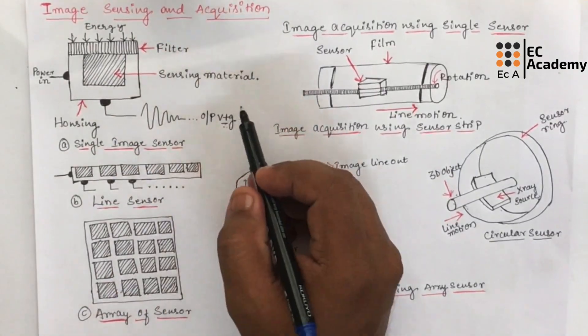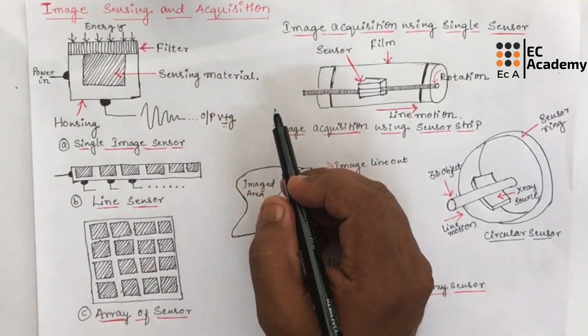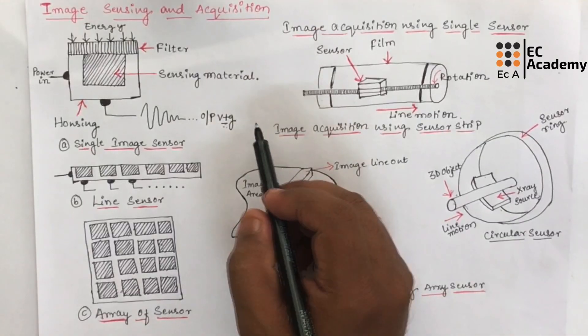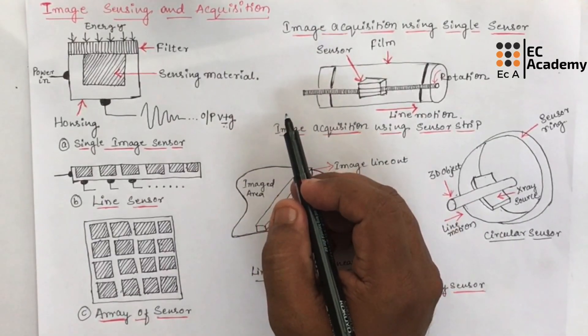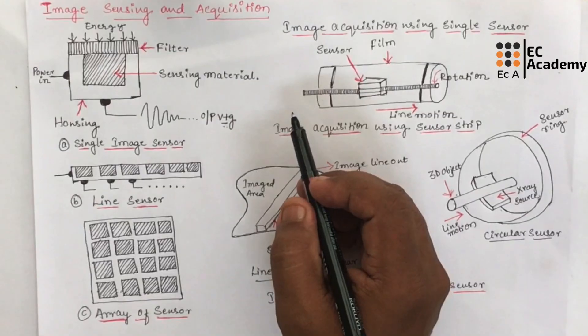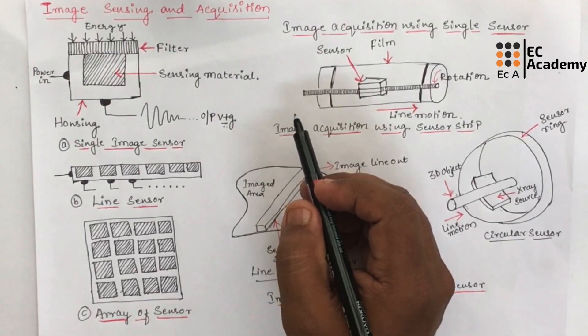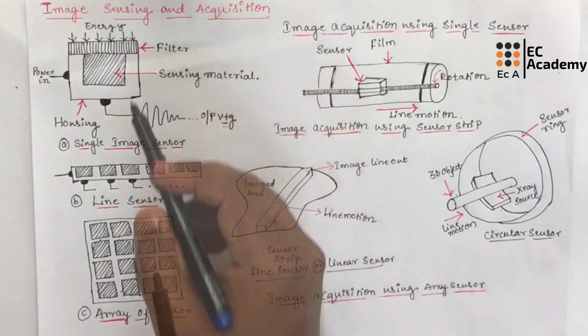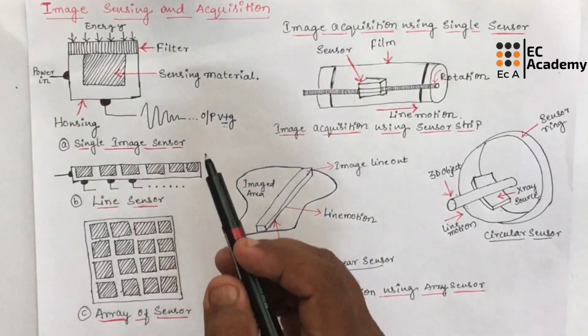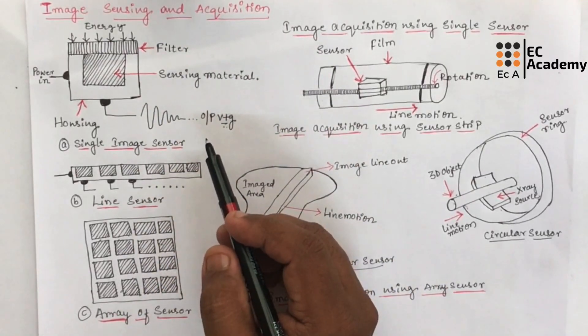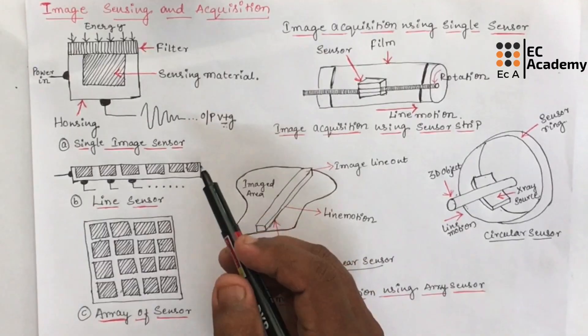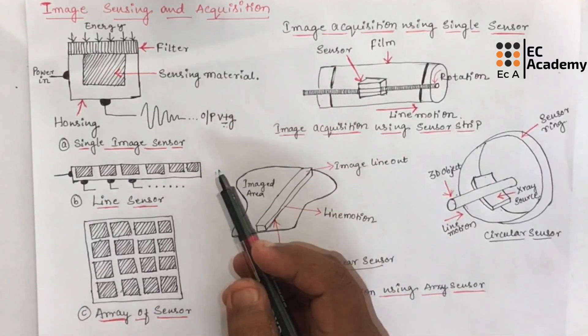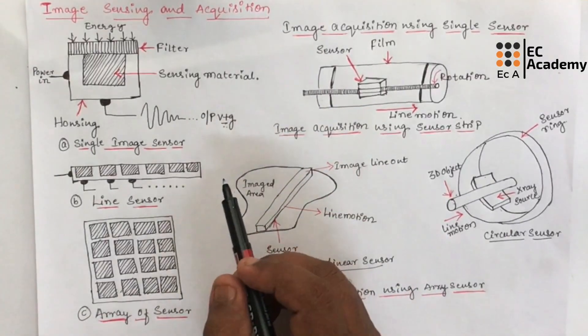Usually images are generated by combination of illumination source and the reflection or absorption of energy from that source by the elements of the scene that is being imaged. So we can generate an image using illumination source as well as the reflection and absorption of energy from the source by the elements that are being imaged.